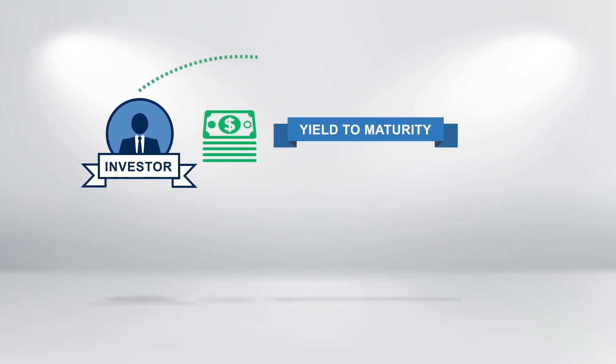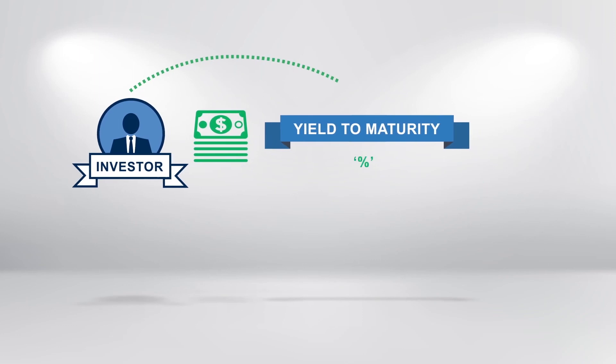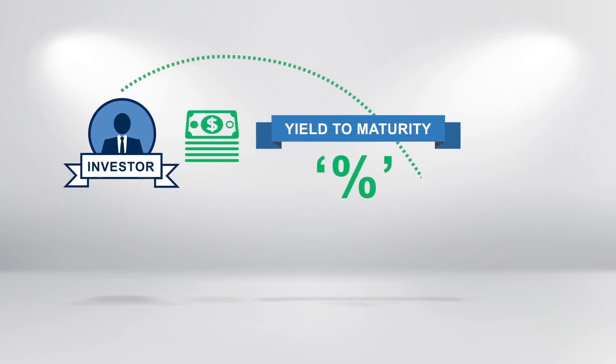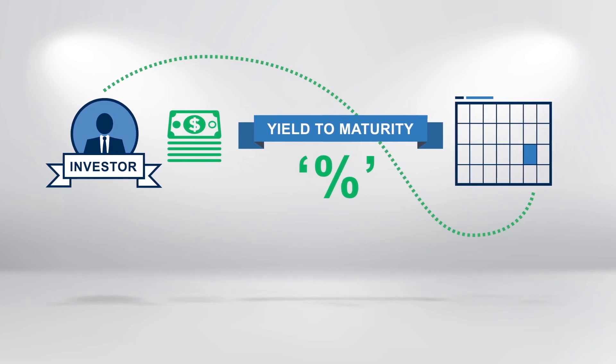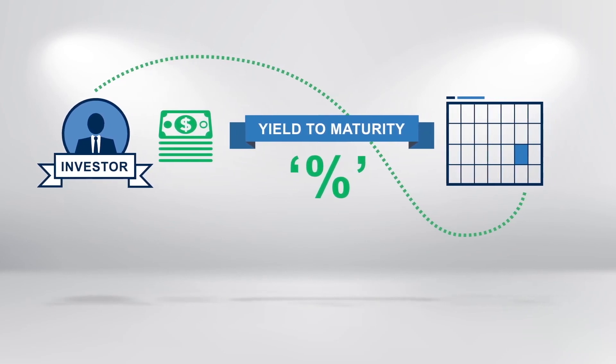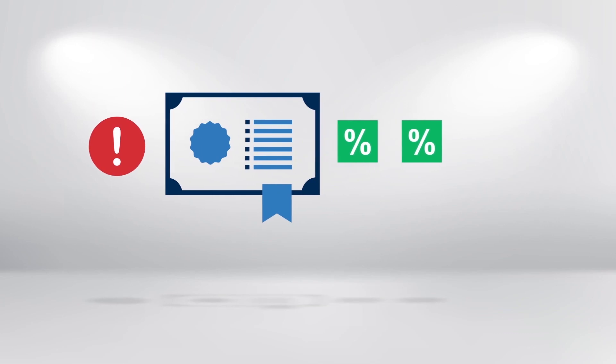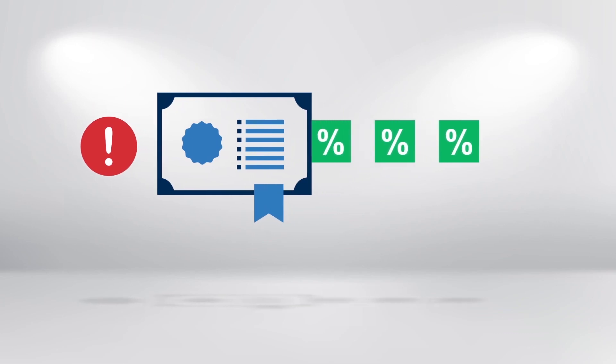The investor's return on the bond is termed the yield to maturity. It defines the total return in percentage terms that the investor earns on the investment if they hold it to maturity. Now this is not to be confused with the interest or coupon paid on the bond. The coupon is the agreed interest paid at predefined intervals on the bond by the issuer.